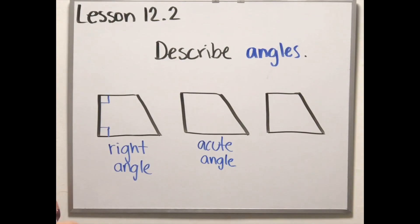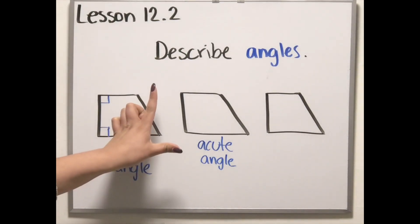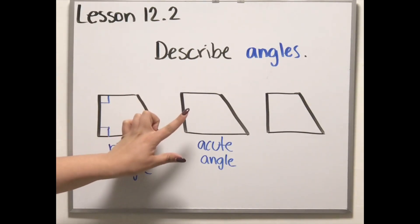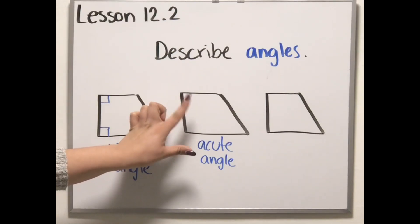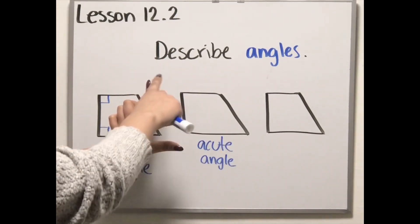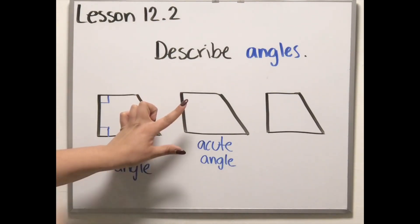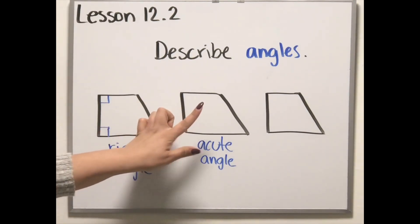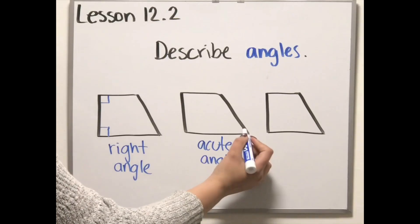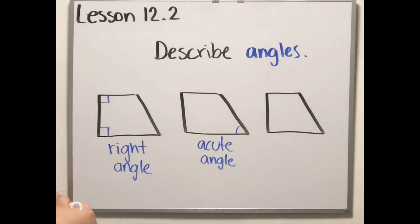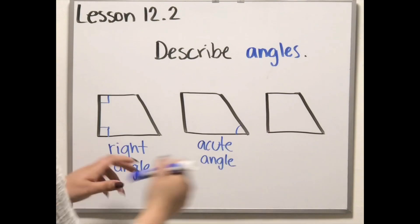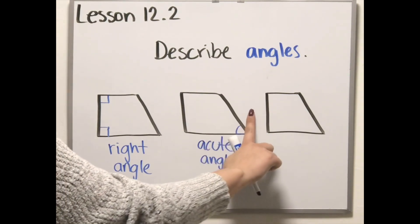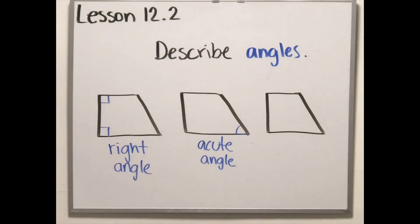The next one is called the acute angle. The acute angle is like a right angle but smaller. It's a cute little angle — it's going to be smaller than the right angle. Which one of these is making a smaller angle? It's this one right here. If you notice, it's not going straight like the right angle — it's smaller than that.